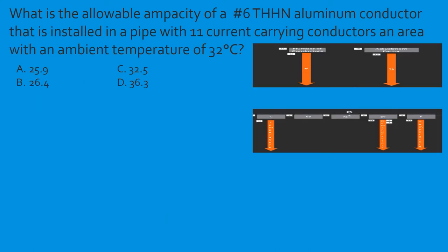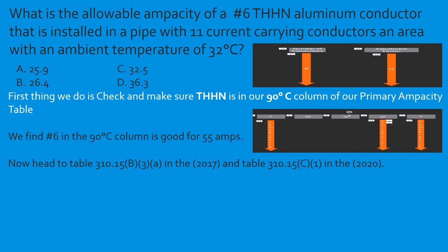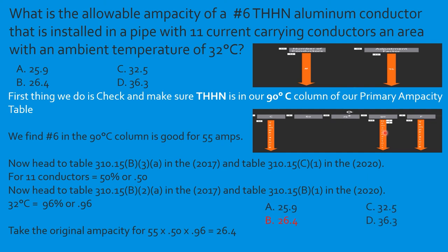Question: What is the allowable ampacity of a number 6 THHN aluminum conductor installed in a pipe with 11 current-carrying conductors in an area with an ambient temperature of 32°C? Confirm insulation is in the 90°C column. Number 6 aluminum is 55 amps. Eleven conductors — bundling adjustment factor is 0.50. Temperature at 32°C — start on the Celsius side, come all the way over to the 90°C column — correction factor is 0.96. So: 55 × 0.50 × 0.96 = 26.4 amps. Select B.